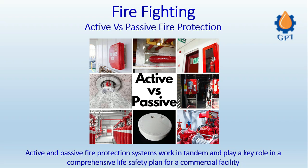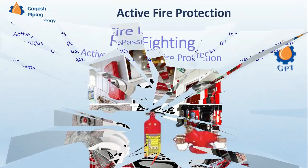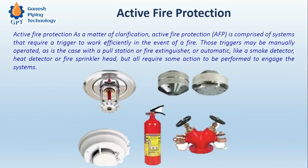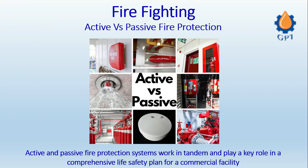Fire is one of the key hazards, along with leakage of toxic gases and chemicals. There should always be a system to protect the entire plant from fire. In this session we are going to discuss the different methods of firefighting. There are two ways of protecting from fire: active protection and passive protection.